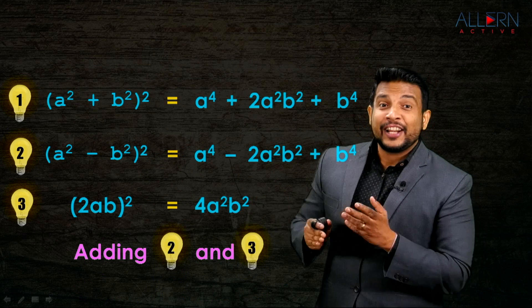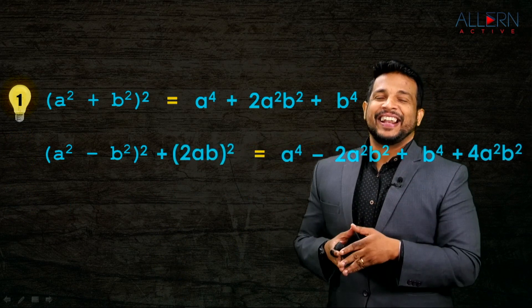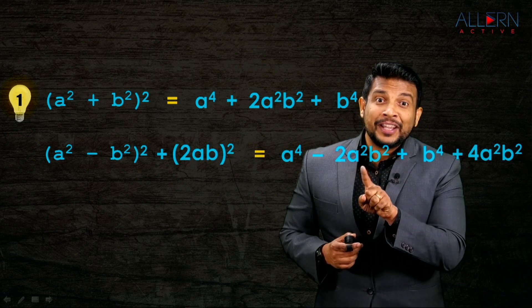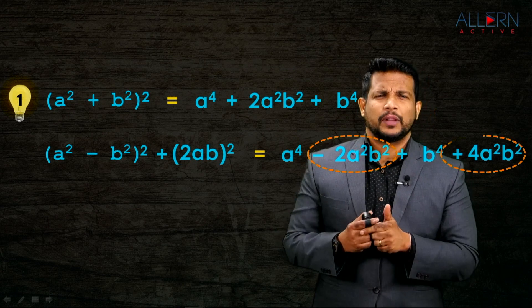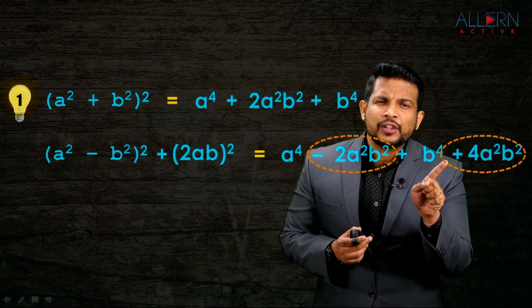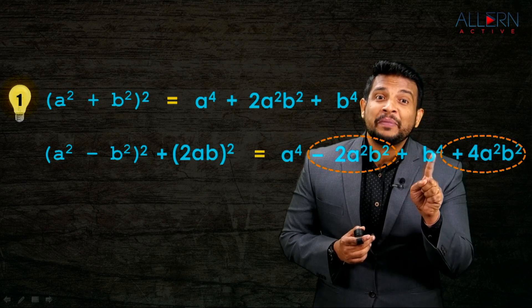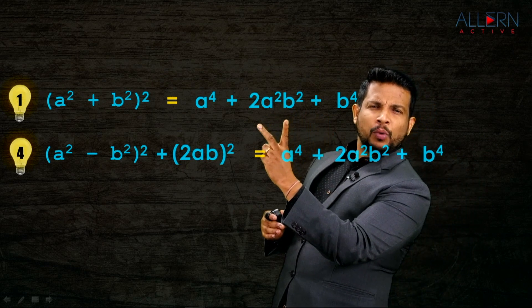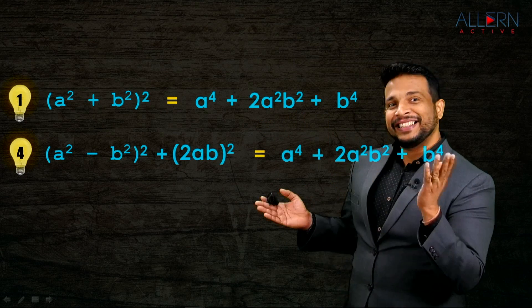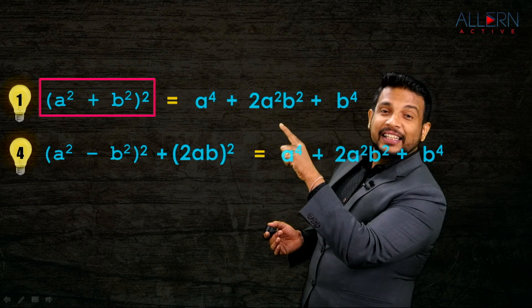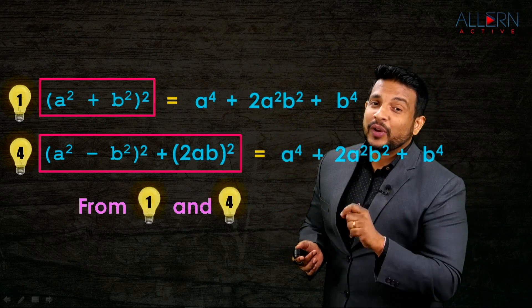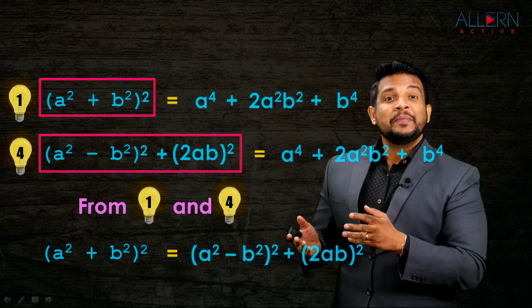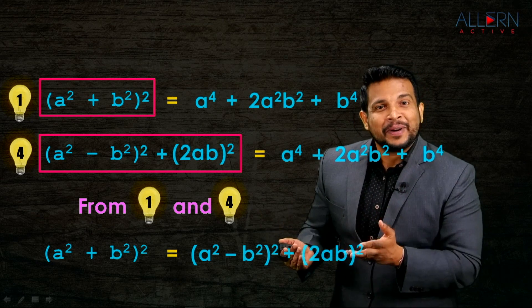On the right side, the like terms involving A²B² are: -2A²B² + 4A²B² = +2A²B². So adding results two and three gives A⁴ + 2A²B² + B⁴ - which is exactly result number one. That means A²+B² whole squared equals A²-B² whole squared plus 2AB whole squared. This confirms that the formula is correct - it is indeed a Pythagorean triplet.